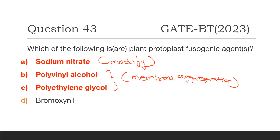Bromoxynil is not a correct answer — it is an herbicide that works by stopping or hindering photosynthesis in plants. So the correct answers are A, B, and C. I hope that was easy to understand, thank you so much for listening.